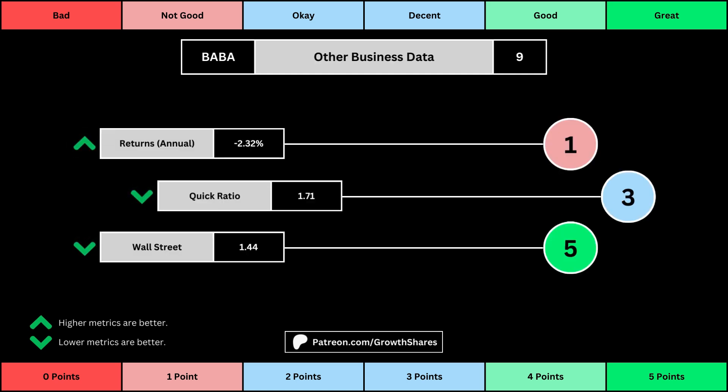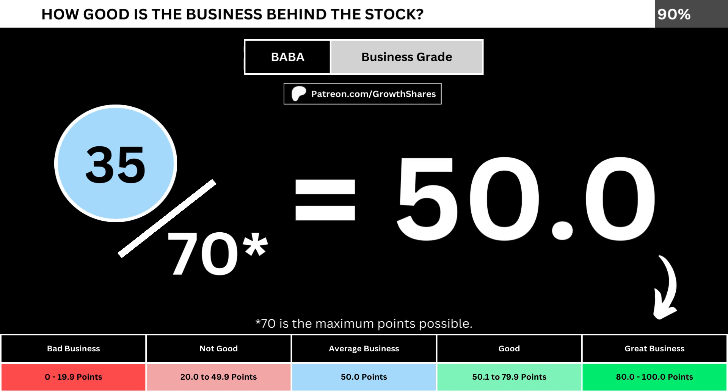The fourth set of metrics looks into other relevant data. First is the stock's performance over a set period of time — usually 10 years, but if the stock doesn't go that far back, we go with the earliest data up to 10 years. The quick ratio is basically how easy it is for the business to pay off its short-term obligations; we want that high so that it's easy to get rid of those debts. And then, Wall Street is the average consensus rating Wall Street analysts give the stock, from a strong buy of 1 to a strong sell of 5. Again, the better values get a higher point total. Adding everything together, we divide the points awarded by the maximum points possible, which is 70. That gives us the business grade for the company.